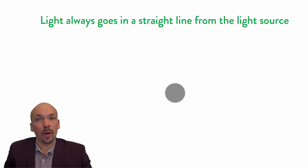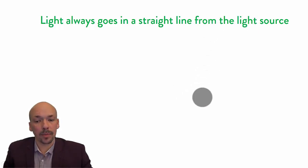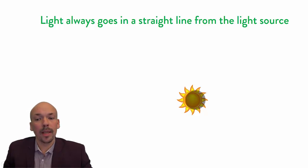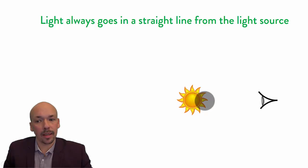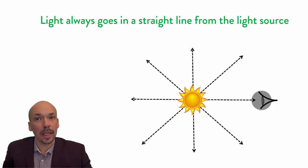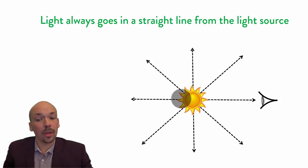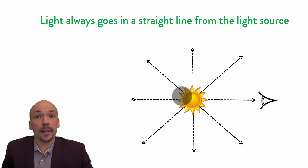A very important rule about light is that it always goes in a straight line from the light source. If you have the sun, or fire, or a candle, or a lamp, then from that light source light rays are emitted, always in straight lines. They don't go around a corner back to your eye — they just go the other way. They always travel in a straight line.